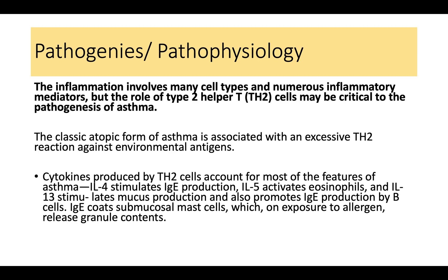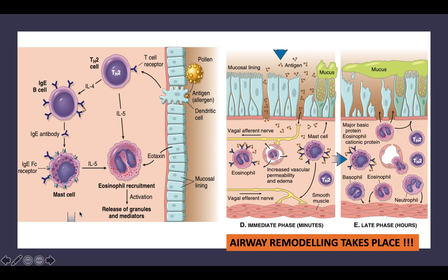The classic atopic form of asthma is associated with an excessive Th2 reaction against environmental antigens. Th2 helper cells secrete three key molecules: interleukin-4 (IL-4), interleukin-5 (IL-5), and interleukin-13 (IL-13). IL-4 stimulates IgE production; IL-5 activates and aggregates eosinophils; and IL-13 activates mucus cells to produce mucus and also promotes IgE production. People with atopic asthma have an increased number of Th2 helper cells that become activated when pollen or an allergen contacts the respiratory epithelium.